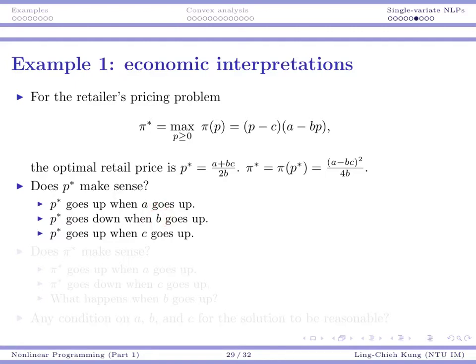For b, it's just the reverse situation. When b is larger, that means the price sensitivity of your product becomes larger. Every dollar increment, you are going to lose more customers. So if that's a worse situation to you, your p star, your optimal price is going to become smaller when people just do not like your product that much.